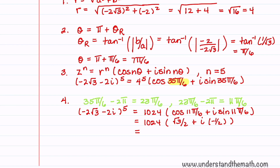Since 2 goes into 1024 giving 512, our final answer is 512 times root 3 minus i. I would suggest that you do a few more problems to get comfortable using this formula.